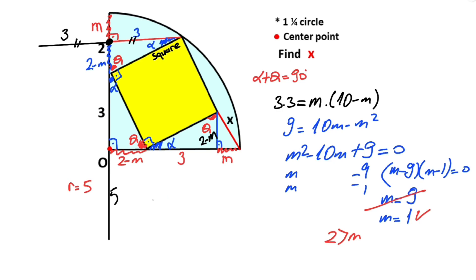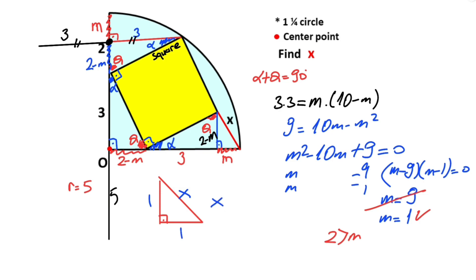If we focus on this triangle — here is 90 degrees, this length is two minus m, this length is m, and the hypotenuse is x. Since m equals 1, both legs are 1 unit, so x equals the square root of 2.